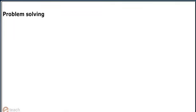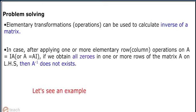Problem solving. Elementary transformations or operations can be used to calculate inverse of a matrix. In case after applying one or more elementary row or column operations on A equals IA or A equals AI, if we obtain all zeros in one or more rows of the matrix A on LHS, then A inverse does not exist.